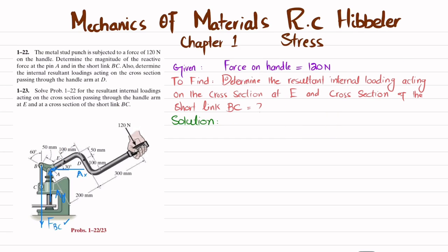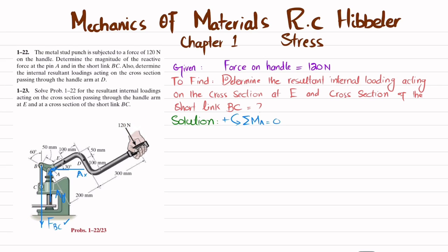To find FBC, we apply the equation of equilibrium: sum of all moments about point A equals zero, taking counterclockwise moment as positive. The load is applied at an angle, and FBC is vertical. We convert FBC into its components. Since the angle is 60 degrees, this other angle is 30 degrees. FBC has two components — one along each direction — so this gives FBC sin(30°) and FBC cos(30°).